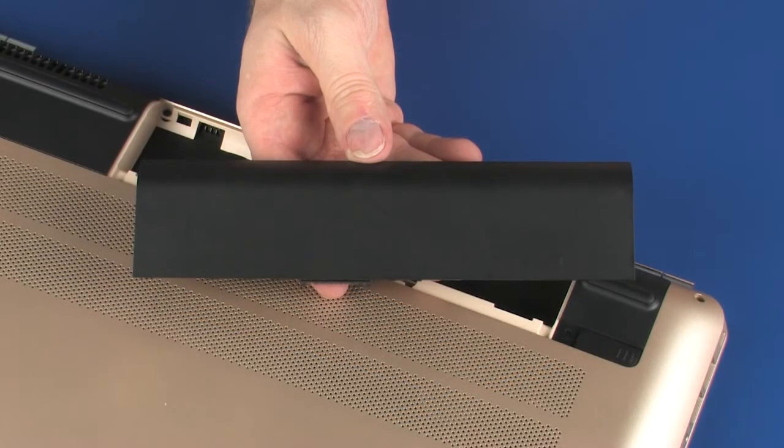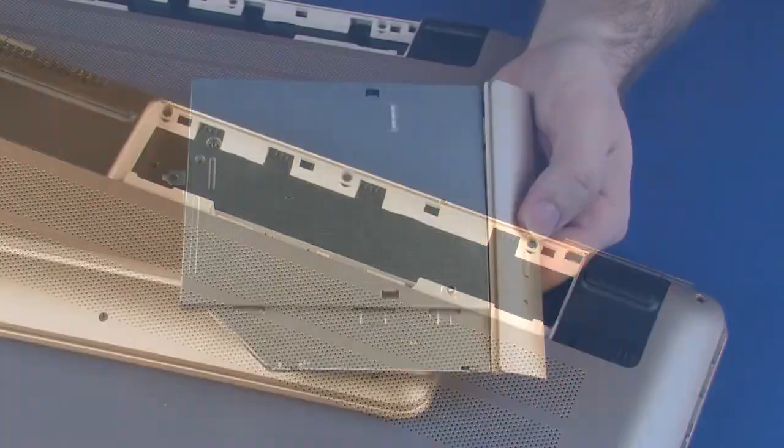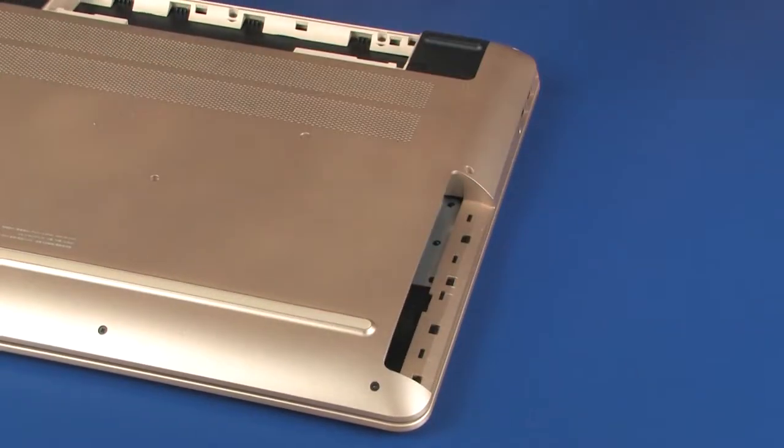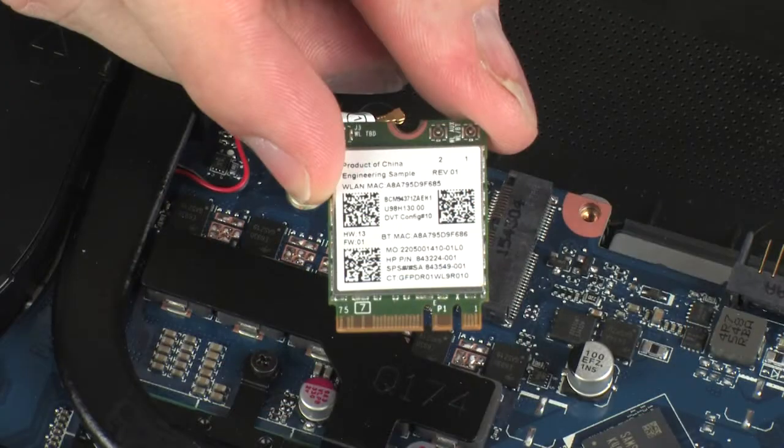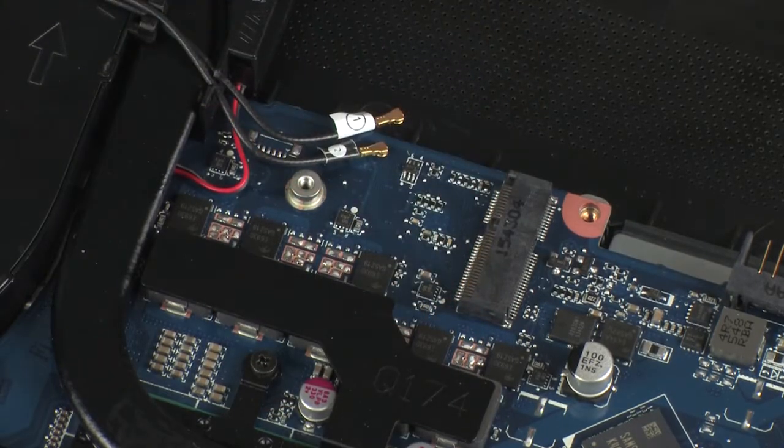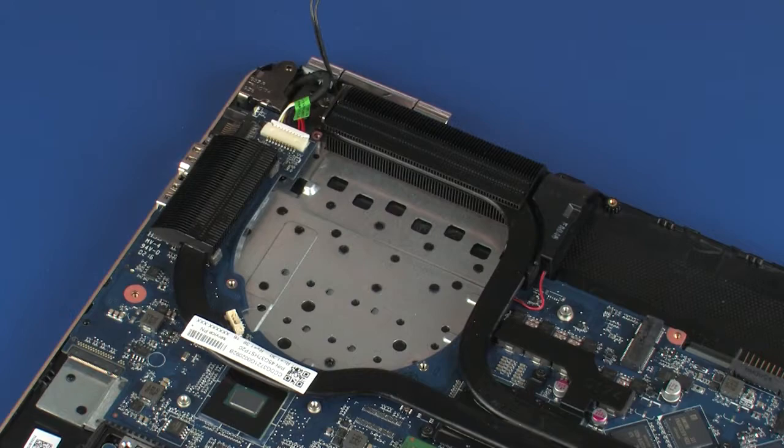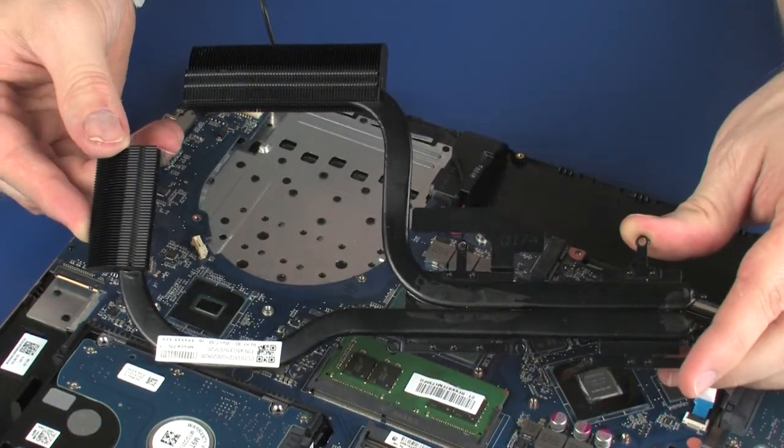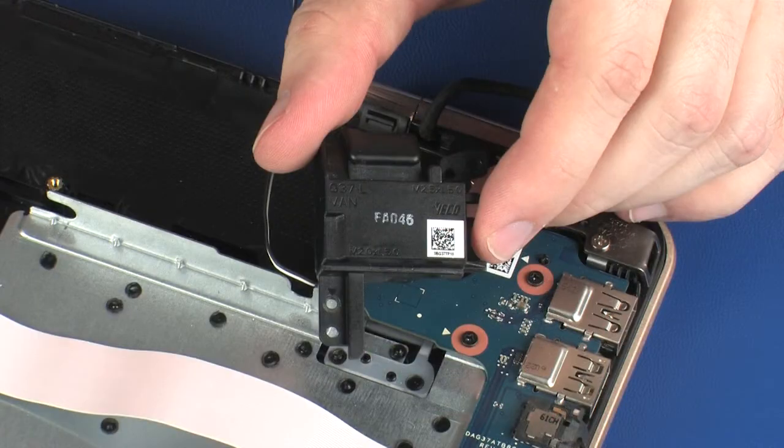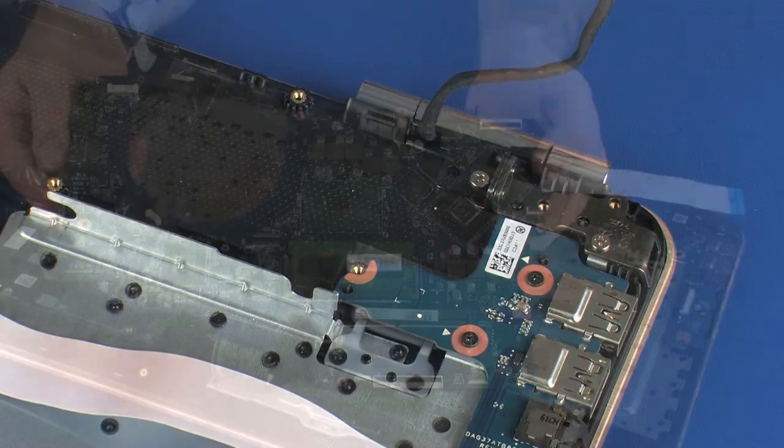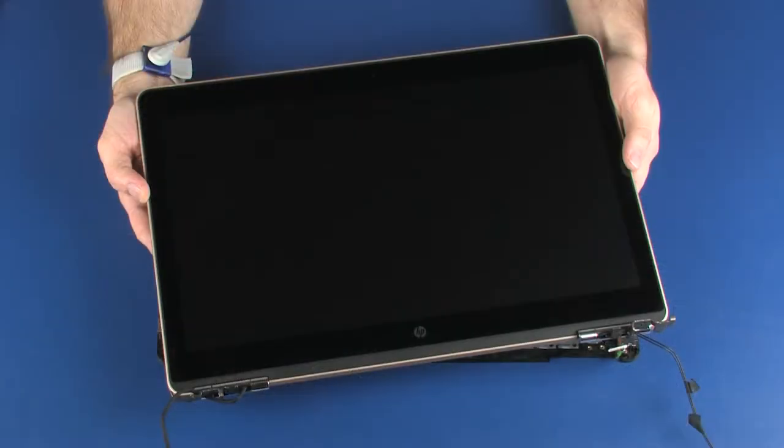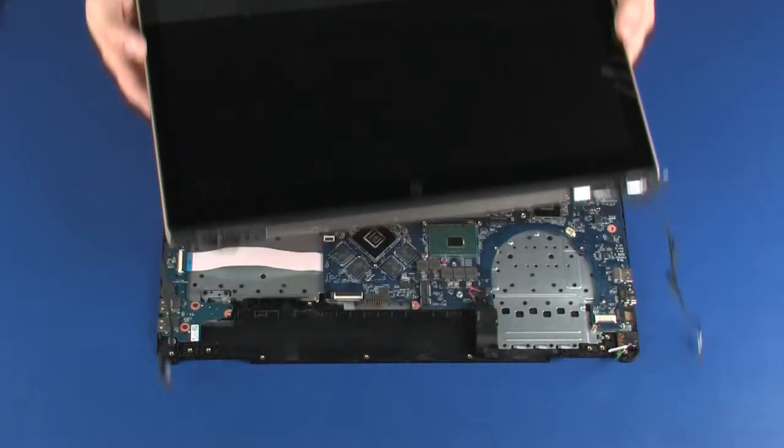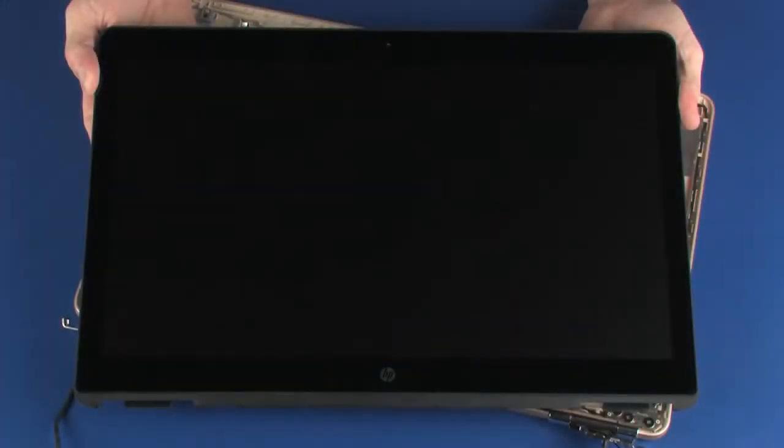Before you begin, remove the battery, optical drive, base enclosure, wireless module, fan, heat sink, left speaker, system board, display panel assembly, and display panel.